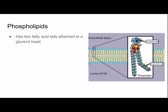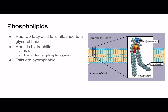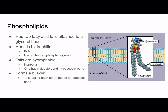Phospholipids have two fatty acid tails attached to a glycerol head. The head is hydrophilic, meaning it likes water, because it is polar — it has a charged phosphate group, which is why it's polar and likes water. The tails, however, are hydrophobic and nonpolar. As you can see in the picture, one tail has a double bond, which is why it's bent. They form a bilayer — tails facing each other, heads on opposite ends. This is a really important part of the cell membrane.